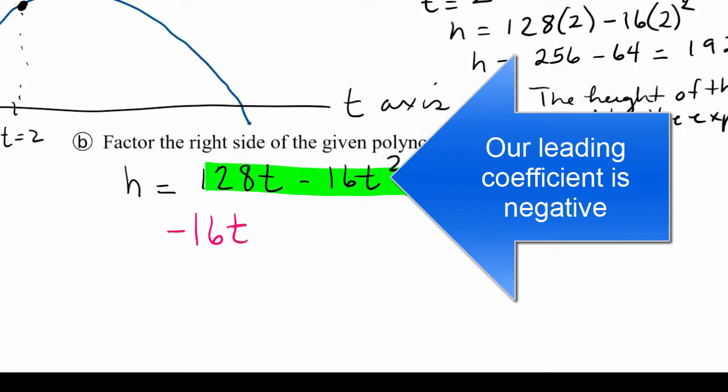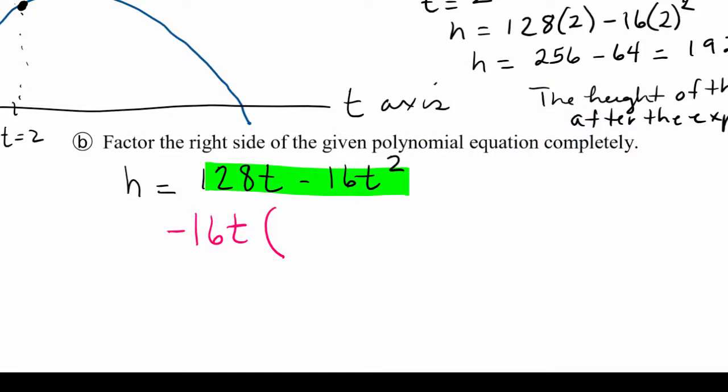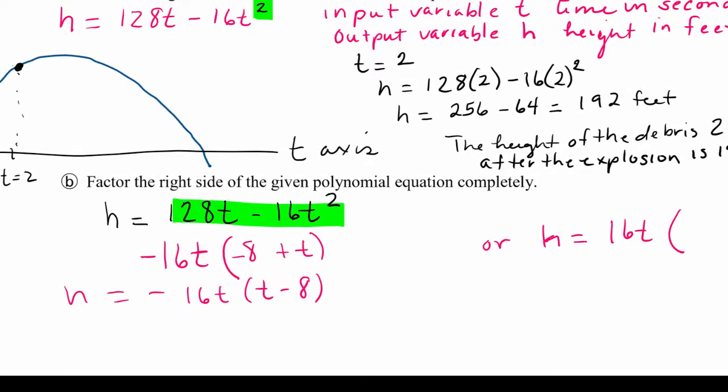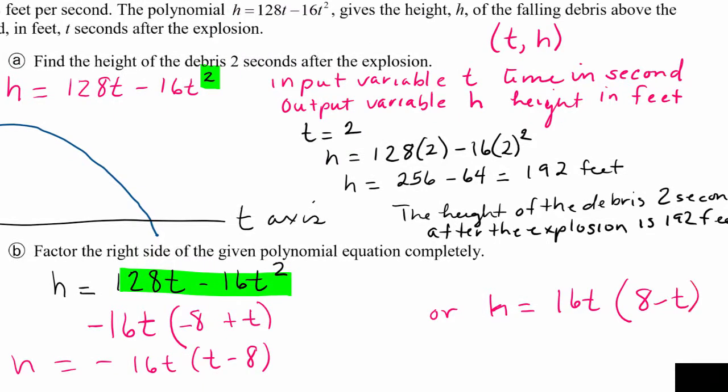So I'm going to factor out a negative 16t, because I like to have that t positive. But truthfully, there are two answers that would be correct. So here I get -8 + t, or I'm going to change that order, t - 8 for h. Or if you just want to factor out the positive 16t, then we would get 8 - t. So these two answers would be considered correct for factoring the polynomial equation completely.